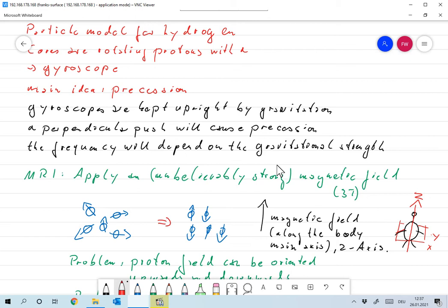One thing is, and one thing that you can also observe with simple toys, the frequency of the precession will depend on the gravitational strength, but it will not depend on the strength of the push. So it will be larger if you push hard, but the frequency will not depend on that. And that will be one key ingredient of magnetic resonance tomography.